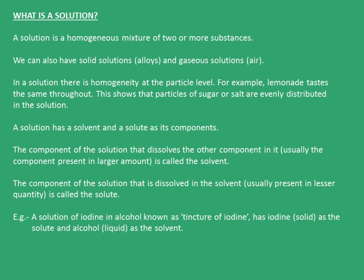Let's first see what is a solution. A solution is a homogeneous mixture of two or more substances. We can also have a solid solution and a gaseous solution. The example of a solid solution is alloys, and the example of a gaseous solution is air. In a solution, there is homogeneity at the particle level. For example, lemonade tastes the same throughout.